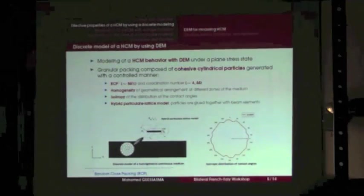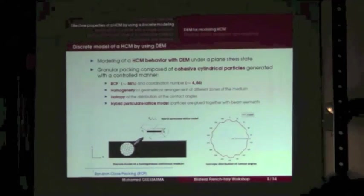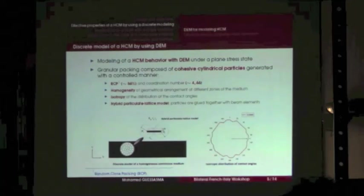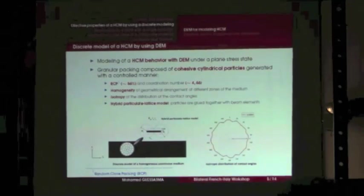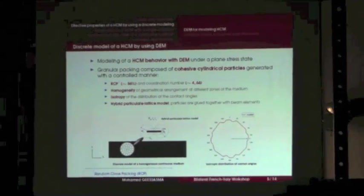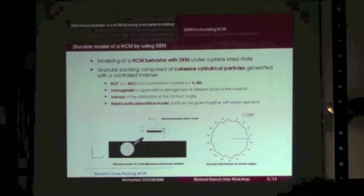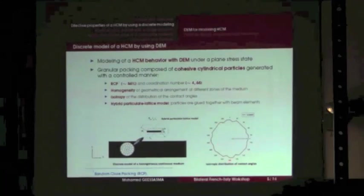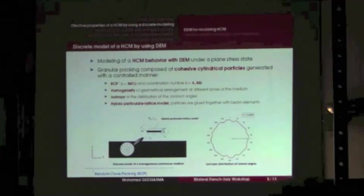The modeling of homogeneous continuous material behavior with the discrete element method is considered in the case of plane stress state. We consider a general packing composed of cohesive cylindrical particles generated in a controlled manner, expecting a random close packing of about 86% and a given coordination number. We assume homogeneity of the geometrical arrangement at different zones of the domain, and we suppose the domain is isotropic by verifying the distribution of the contact angle — there is no preferential direction of contact.